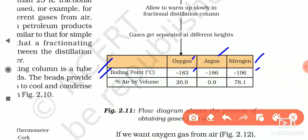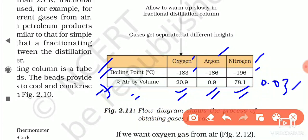The percentage of each gas in air by volume: oxygen is 21%, argon is 0.9%, nitrogen is approximately 78%, and carbon dioxide is 0.03%.